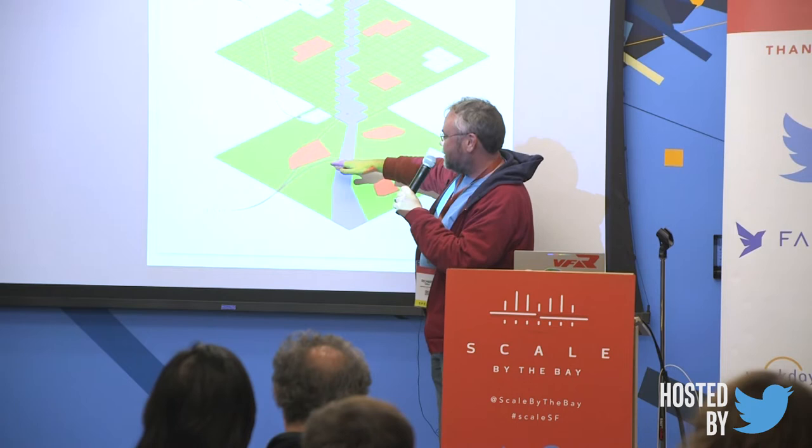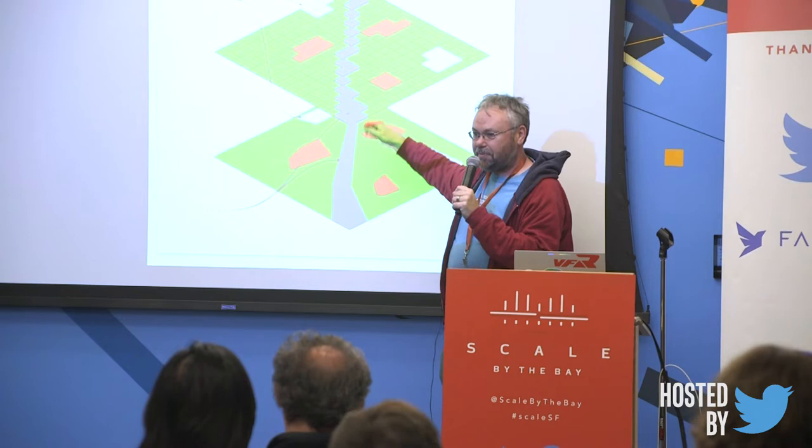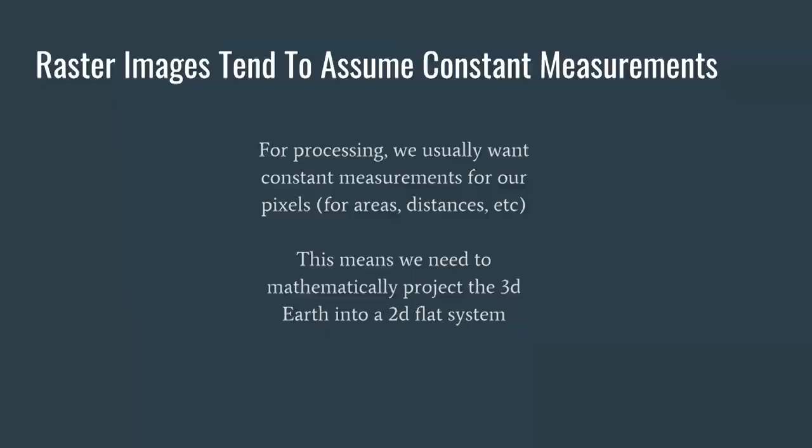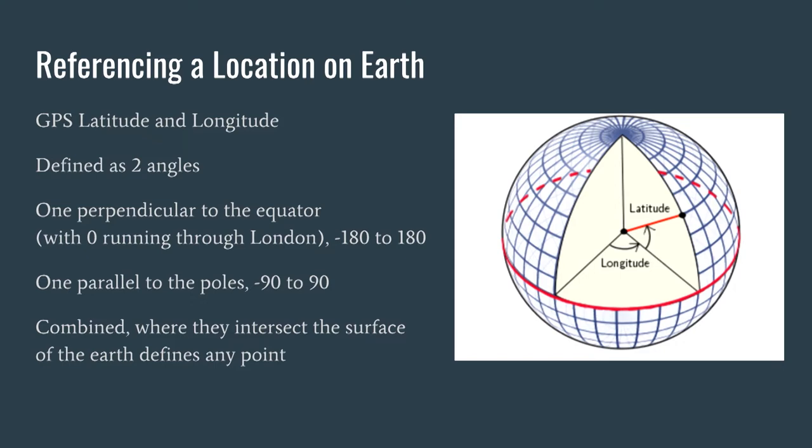Vector is what you get on your GPS — lat/longs, draw lines in between, fill them with colors, and you get a nice scalable map; it's like SVG. Raster is like an image — it has the assumption that all pixels are the same size, and that's the problem. As you move around the globe those pixels aren't really the same size.